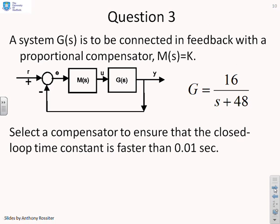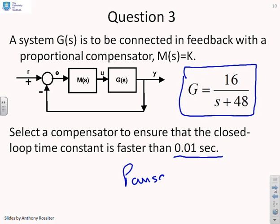Question three, then. A system G of s is to be connected in feedback with a proportional compensator, m of s equals k. Select a compensator to ensure that the closed loop time constant is faster than 0.01 seconds. And you're given this G of s here. So again, now is the time to pause before we move to the solution.